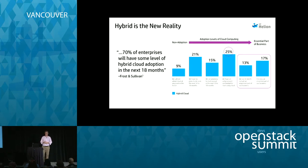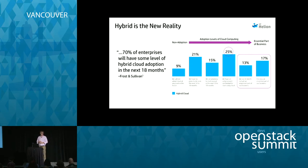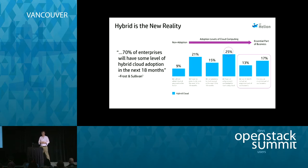You're going to have hybrid workloads — check clearing in banks, for instance, where part runs on a mainframe, part on Linux servers, part is web-based, and all those things need to come together. One of the largest retail banks in the world: 65% of all code still running in production is written in COBOL and runs on a mainframe, while 90% of all new code they write runs on an OpenStack implementation or other cloud technologies. That's what we mean by hybrid.